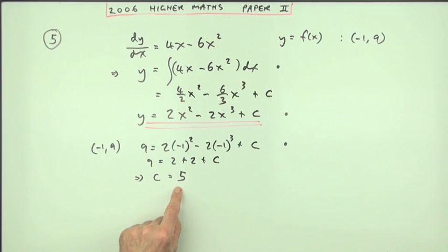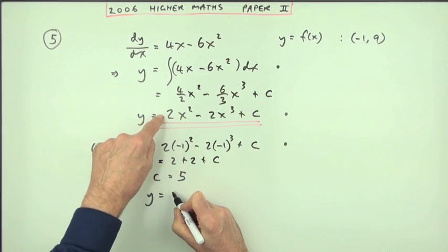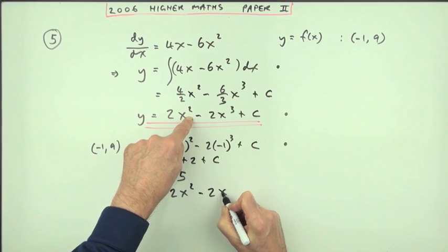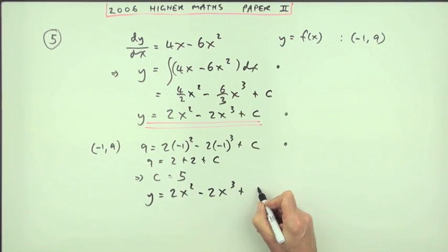Now, you need that, but that's not the final mark on the question, because the question said, express y in terms of x. So you just finish off by doing what it says. So that means it's 2x squared minus 2x cubed plus 5. There's your fourth mark.